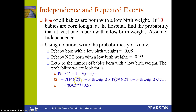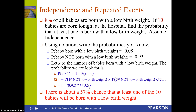Each of those probabilities is 0.92, and there are 10 of them. So the answer is 1 − 0.92^10, which is about 0.57 or 57%. There's about a 57% chance that at least one of the 10 babies will be born with a low birth rate.